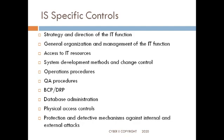System development methods and change control address how the software development life cycle is happening in the organization and how changes are managed to ensure things follow a proper path. Operations procedures cover the various operational procedures in place. Quality assurance procedures relate to testing. BCP/DR — which we will cover in detail in forthcoming modules — covers business continuity planning and disaster recovery planning. Database administration covers how databases are administered, and physical access controls ensure proper physical access is in place.